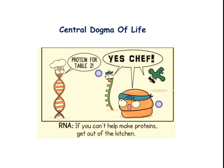First we will learn about the central dogma of life. Basically the central dogma of life is nothing but three processes: first, DNA to DNA, that is replication; DNA to RNA, that is transcription; and RNA to protein, that is translation. As you can see in my slide, DNA is directing the mRNA to make protein.